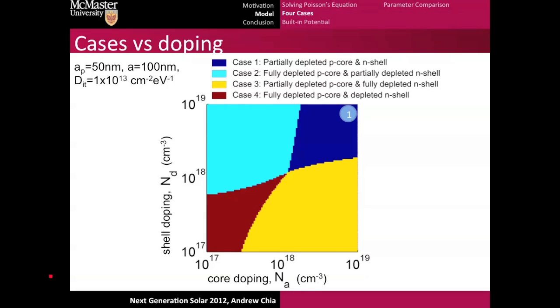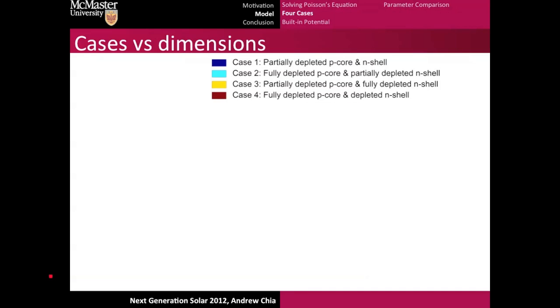When we take a look at it, we recover what we'd expect. For example, a very high core and shell doping, you'd expect case one, partially depleted N-shell and P-core. If both the dopings were very low, we'd expect case four, where the whole thing is depleted. We can do similar analysis, and we recover what we'd intuitively expect for each of the cases. Now, this isn't really that useful because it's just a single wire with a particular core radius and particular shell radius.